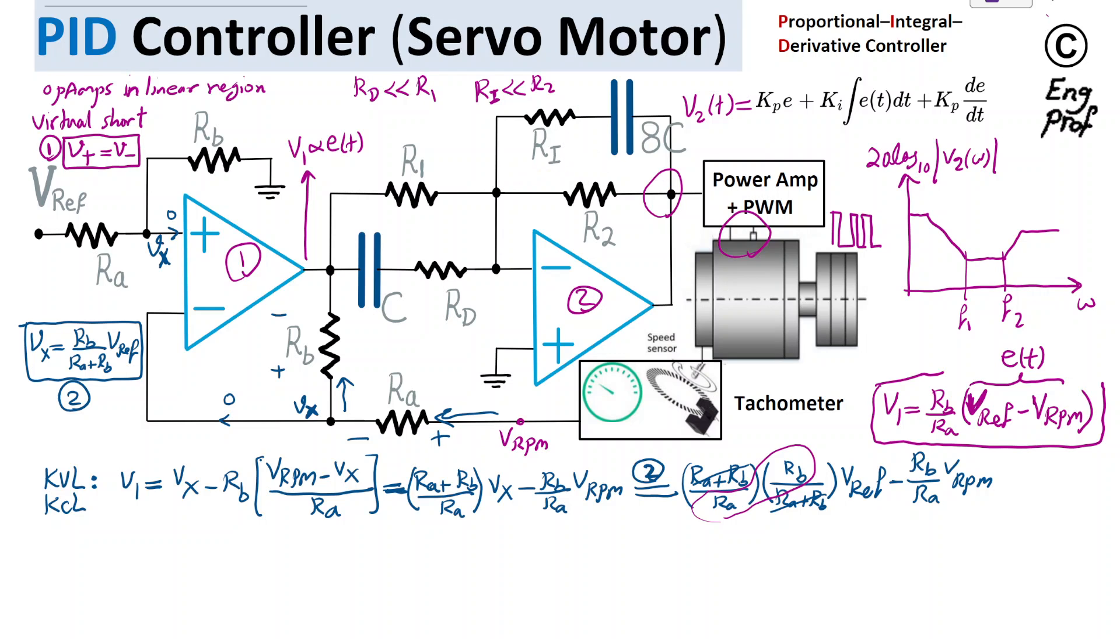Since Ri and Rd are much smaller than R1 and R2, in super high frequency, Ri is dominant in parallel with R2, and Rd is dominant in parallel with R1. Therefore, the gain of the circuit converges to negative Ri over Rd. That's exactly what we saw here. This gain is effectively absolute value of negative Ri over Rd at super high frequency.